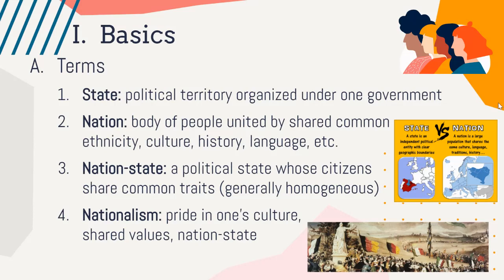To start off, let's get familiar with a couple of basic terms. A lot of these words are often used interchangeably, but for our purposes, a state is a political territory organized under one government — usually a region with defined borders and a specific government. It also has sovereignty, which is just the rule of oneself, meaning whatever happens within that state's borders is under control of that government, and no outside government has any say.